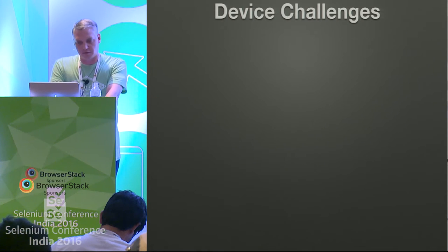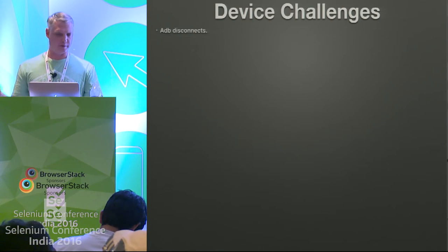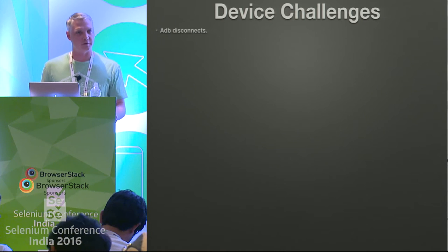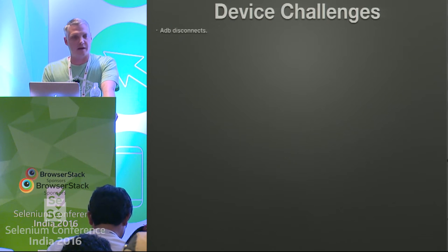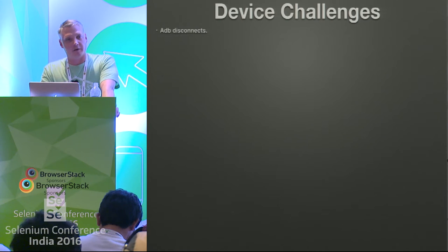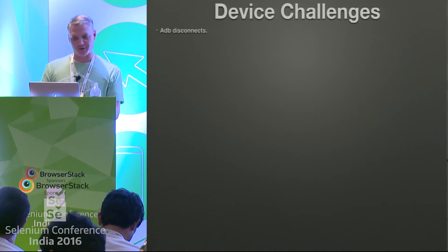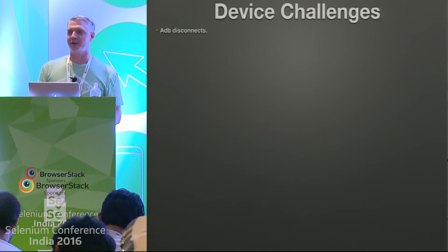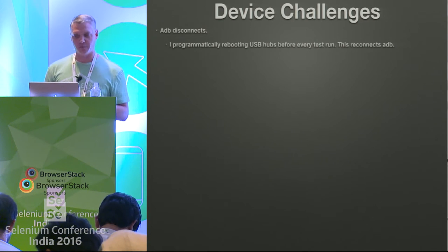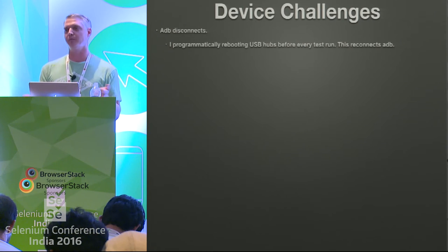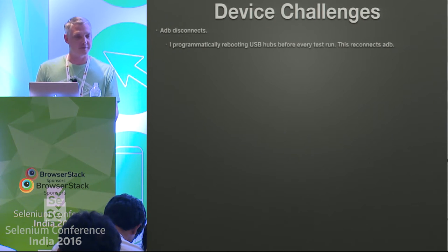Some challenges I've faced with this setup: ADB disconnects — one minute the device is connected, the next minute it's not and you have no clue why. There are thousands of Stack Overflow pages about this; the number one solution is to unplug and plug the device back in. But how do you do this at scale on a mobile grid? Going back to the programmable power strip — at the beginning of every test run, it cycles the USB hubs, which essentially unplugs and replugs the devices. It's probably not the most elegant solution, but it took ten minutes to implement, it works, and it runs every time.